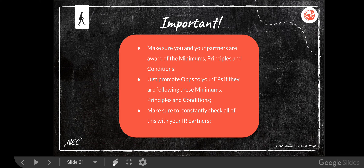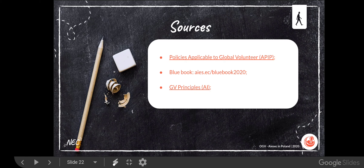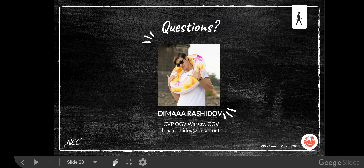Just make sure that you and your partners are aware of the minimums, principles, and conditions, and that you all follow them — because otherwise the experience may not be full, safe, sustainable, or just fun for your EPs. And if the client is not satisfied, it means your product is not good yet, so work on it. Only promote opportunities to your EPs if they're following these minimums. Make sure to constantly check all these requirements with your IR partners, to make sure they are aware of them, and to choose the right partners — not ones that do not follow these rules. Here are the sources where you can find more information. Thank you for your time — hit me up if you're interested in why I have AAA in my name. Have a good day, bye!